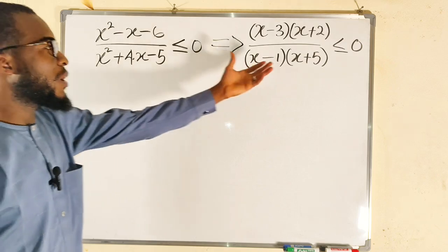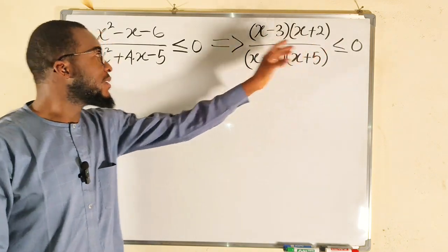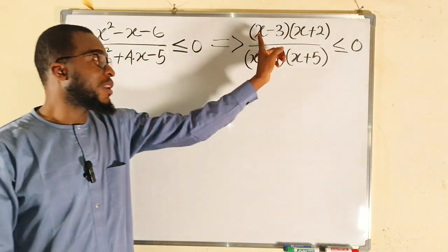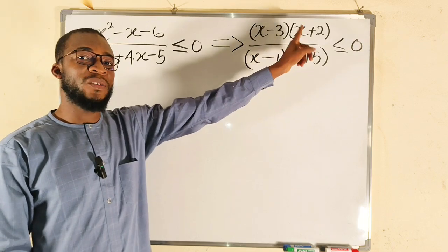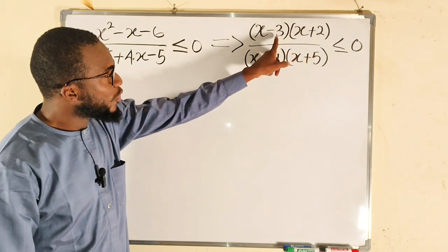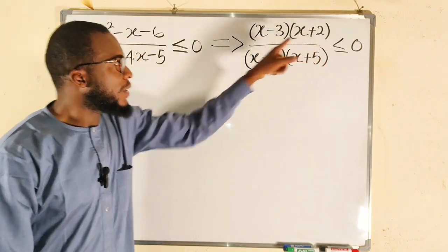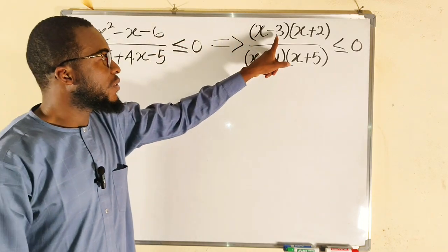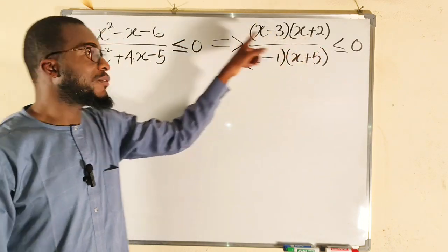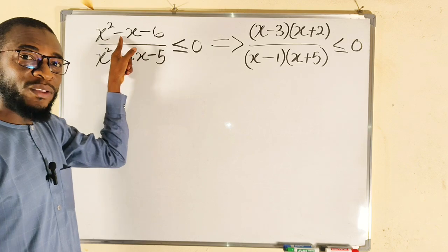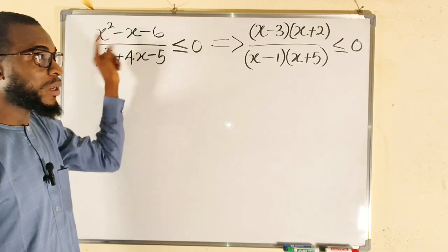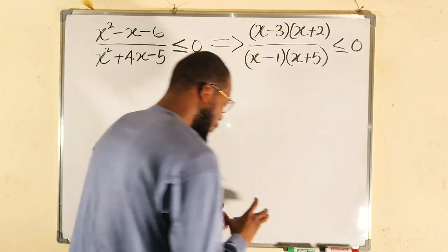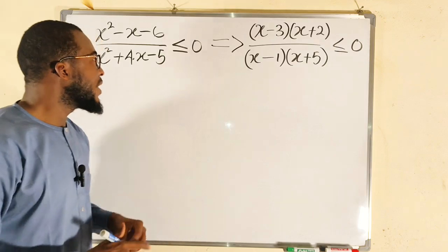I have already factorized them. x squared minus x minus 6 is the same thing as (x minus 3) multiplied by (x plus 2), because once you multiply negative 3 by positive 2 you get negative 6, and once you add negative 3 and positive 2 you get the coefficient of x, which is negative 1. The same thing applies to the other expression.